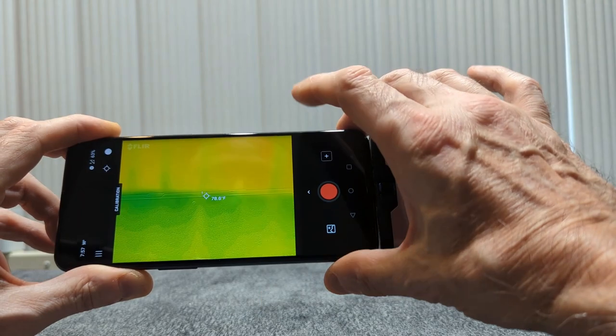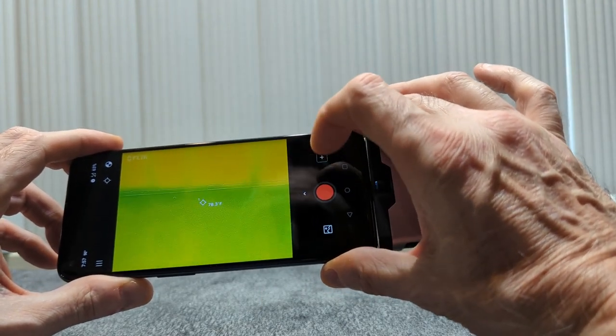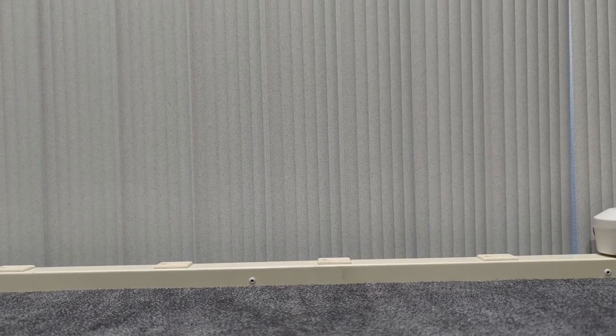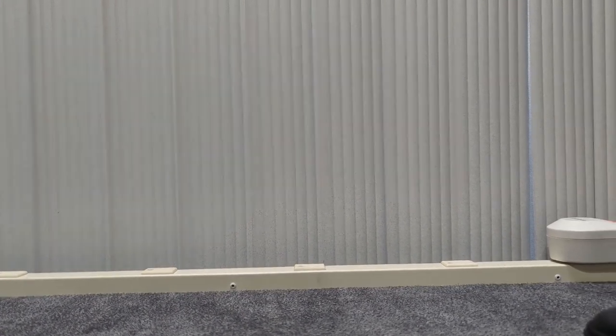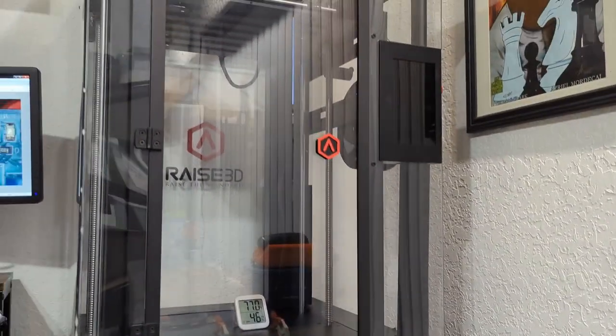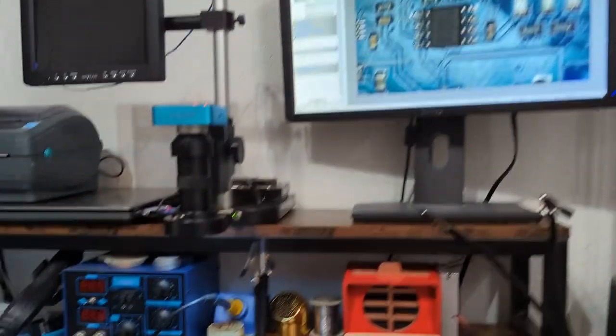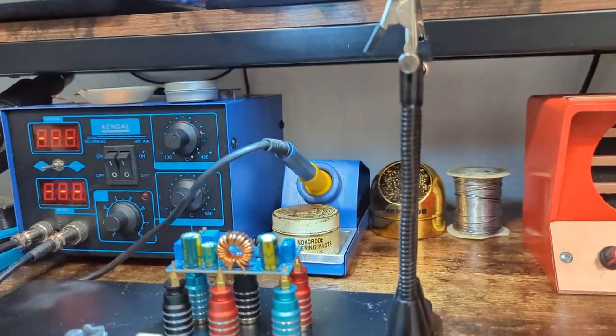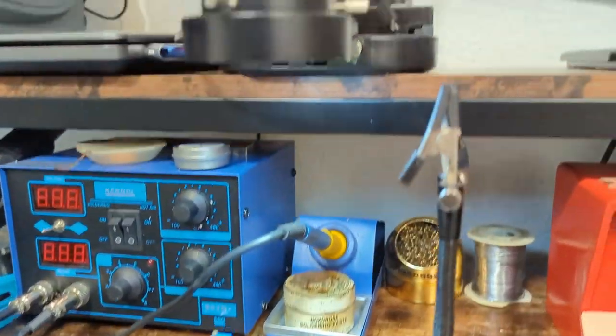So there's something else that we have. So another new toy that I actually have that I would like to be able to do a video on sometime soon is my, well there's my 3D printer, my new camera. I have a new inspection camera that I have purchased for doing electronics and electronic work.